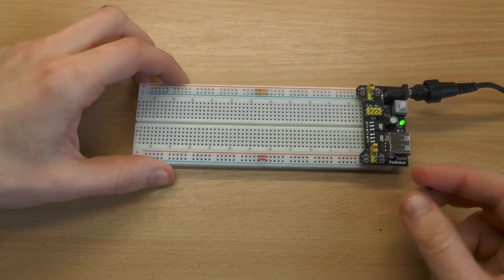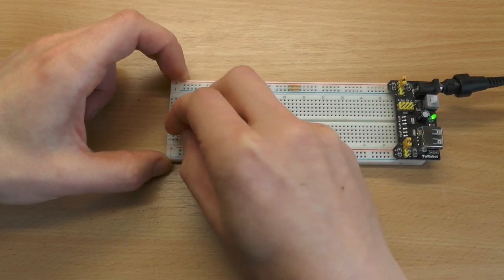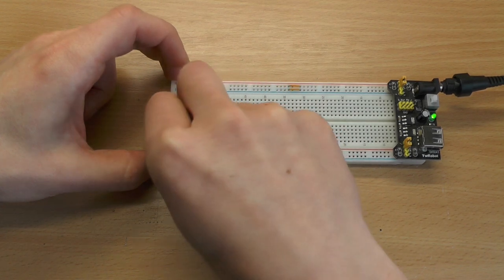So we take the breadboard with 5 volts here and just place the Hall Effect Sensor here.